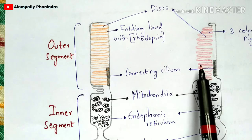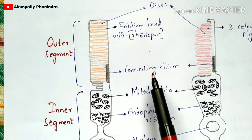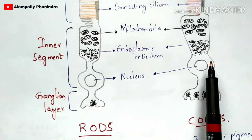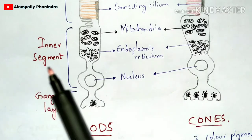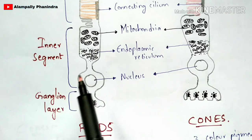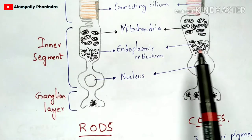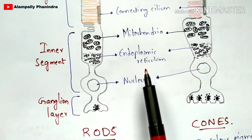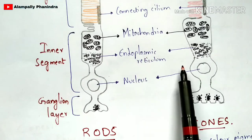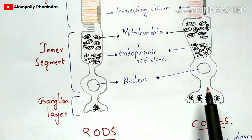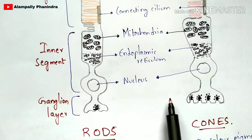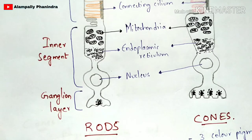Coming to the inner segment: it consists of organelles like mitochondria, endoplasmic reticulum, and nucleus. The ganglion layer plays a major role in the vision cycle and also in hyperpolarization.